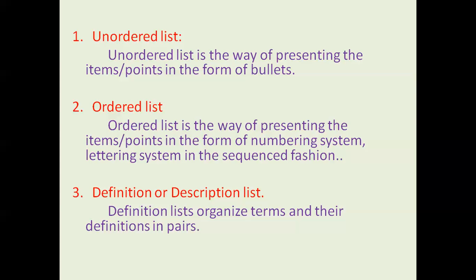Coming to the ordered list — ordered list is a way of presenting items in the form of a numbering system, lettering system, Roman numeral system, or in any other sequenced fashion. And coming to the third and last one, definition or description list — definition list organizes terms and their definitions in pairs. You give some heading and the description of that heading is the definition. The combination of all those pairs is a definition or description list.